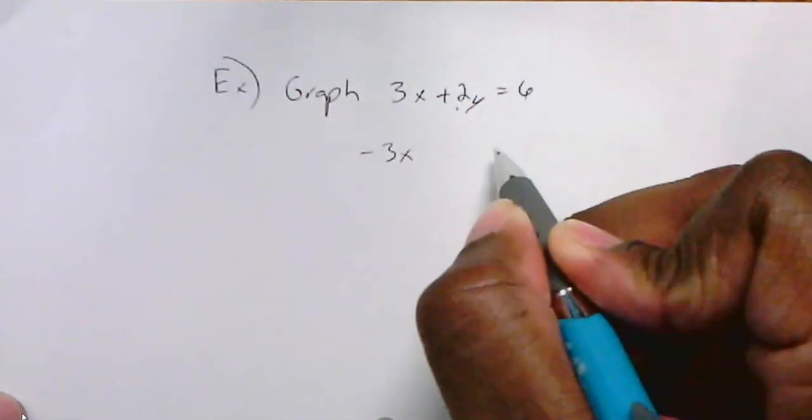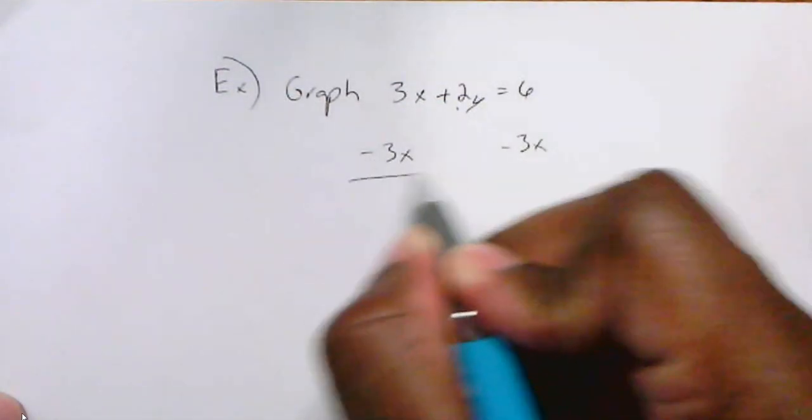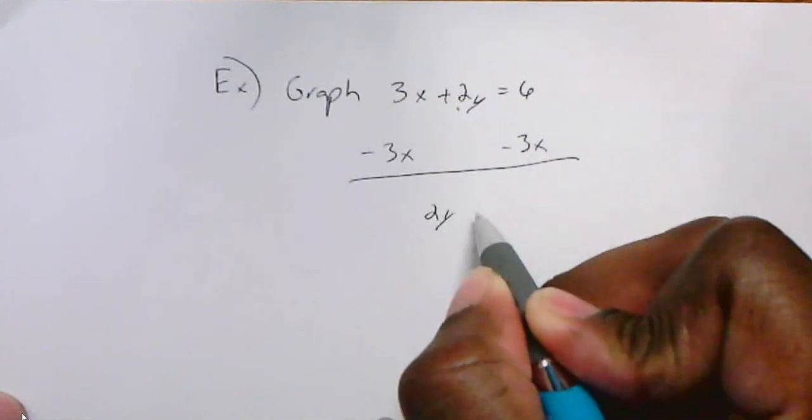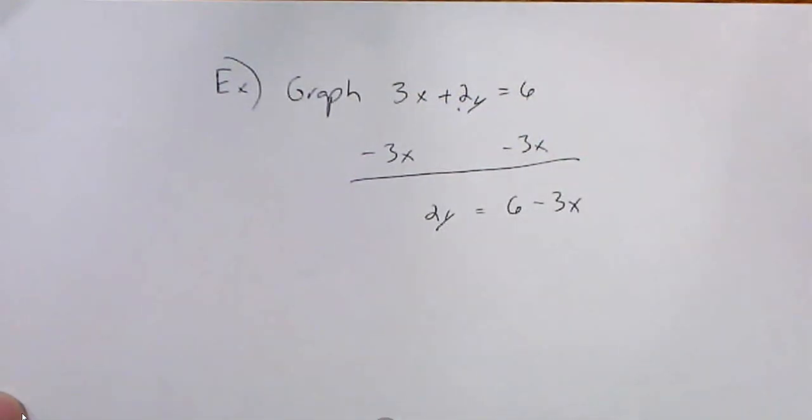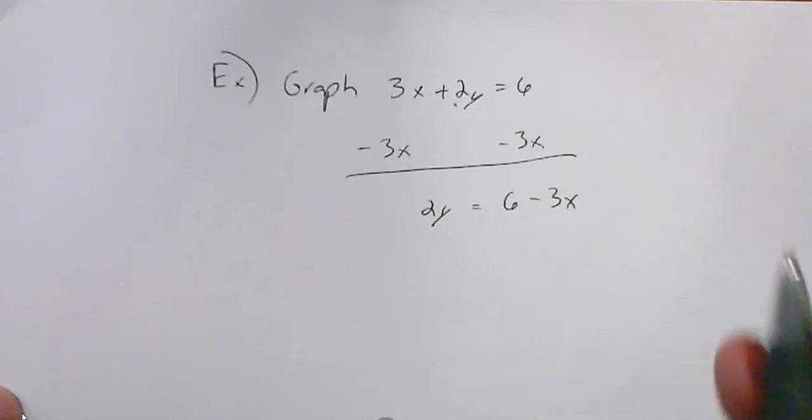I'll subtract 3x from both sides, and I'll get 2y equals 6 subtract 3x. They're unlike terms, so you can't combine them other than 6 subtract 3x.